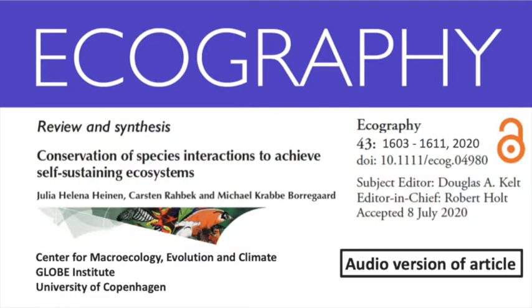Such self-sustainability relies on functional species interactions, yet species interactions are often overlooked in the conservation literature and when designing species-specific management efforts. Some interactions may not be restored under general management, such as land protection, and may require additional specific management interventions. Interventions targeting these specific interactions fall in a gap between general and species-specific management, effectively bridging community and population level approaches to conservation management. We propose that managers should explicitly identify cases where active management of specific interaction partners is required to achieve population self-sustainability.